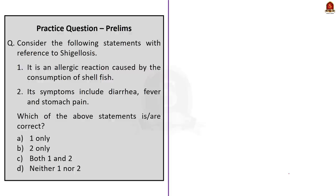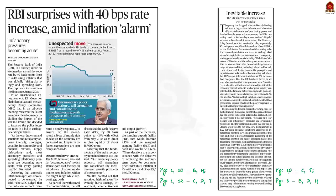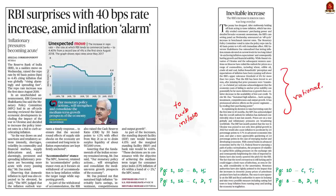Our next discussion is based on the recent policy rate hike by the RBI. The news article talks about various changes made by the RBI including the policy rate hike to curb accelerating inflation. The editorial discusses the rationale behind these changes. We will focus on important economic terms: repo rate, cash reserve ratio, standing deposit facility, and marginal standing facility. We will also see how an increase in the policy rate will help the RBI in achieving inflation targeting.